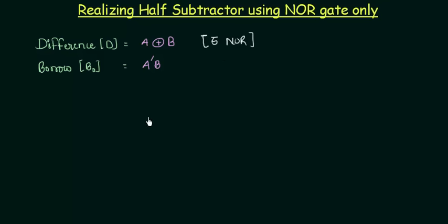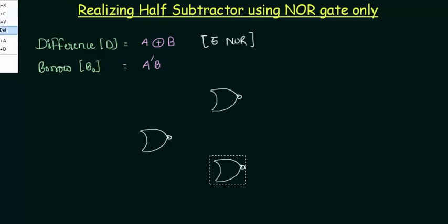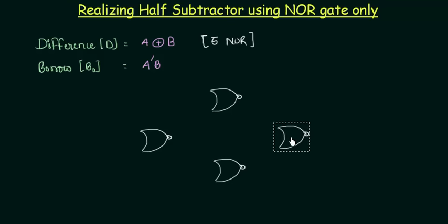Let's make the 5 NOR gates. This is the first NOR gate, and I'll copy and paste it. Here's the third NOR gate, then the fourth NOR gate, and finally the fifth NOR gate.